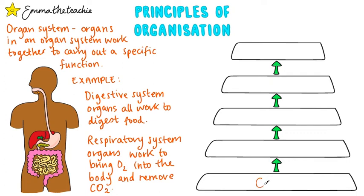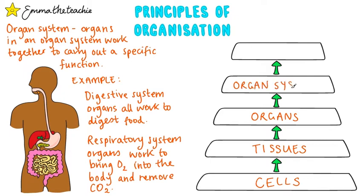Let's take a look at the final hierarchy. At the bottom we've got cells, which build up into tissues, which build up into organs, and lots of organs make an organ system. And what do you think is at the top? It's the whole organism itself — for example, a human.